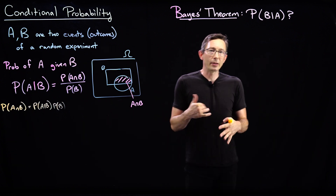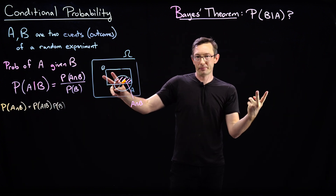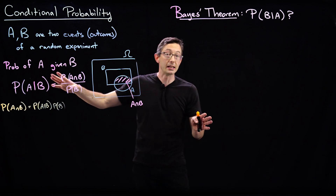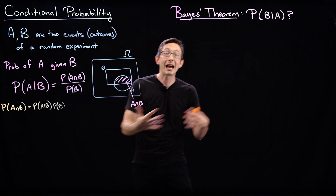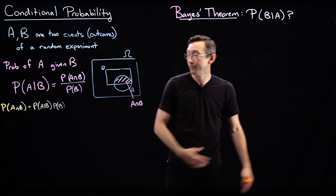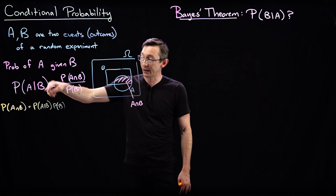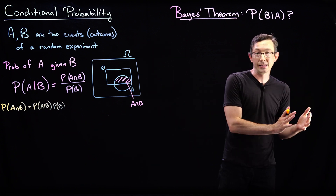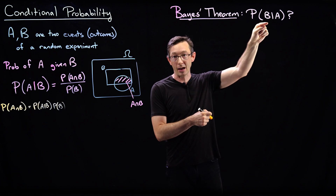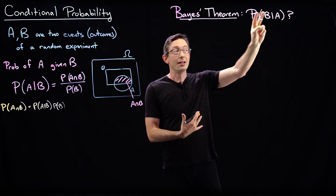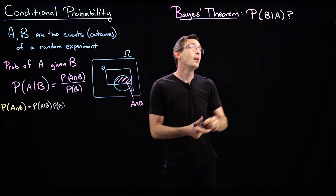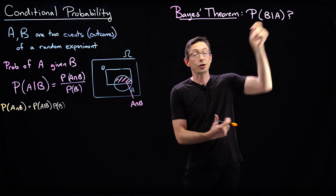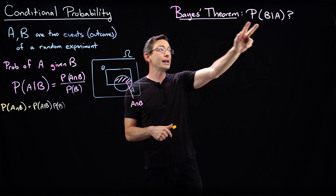In statistics and probability, often we want the opposite information. Maybe B is some disease — whether or not you have cancer — and A is a test result or some symptom. I could compute the probability of having that symptom given that I have cancer, but what's much more useful is: given that I have a positive test result or symptom A, what is the probability of an underlying cause like cancer? This is called an inverse problem because I'm trying to compute the probability of something difficult to measure using some observable measurement that I actually can measure. Bayes' theorem is going to flip this on its head.